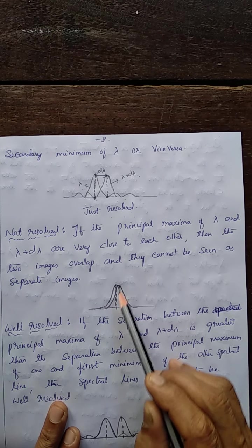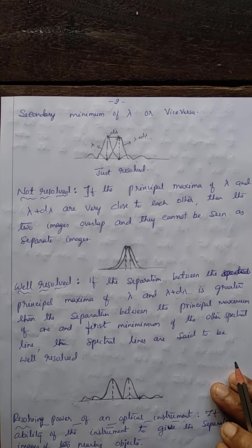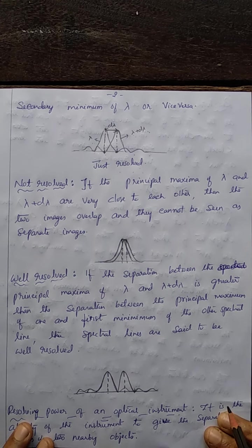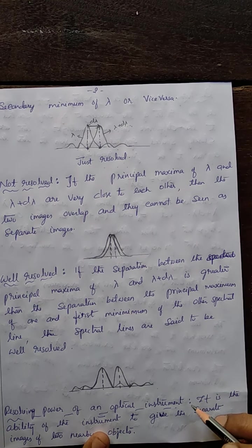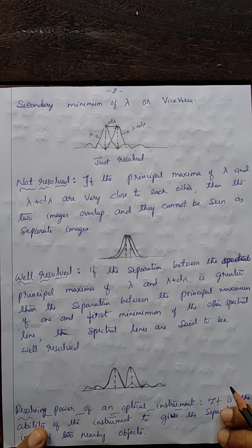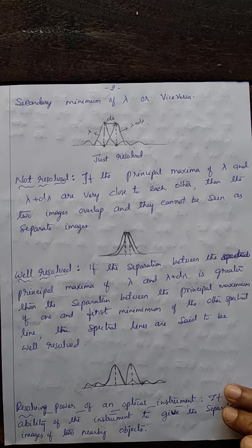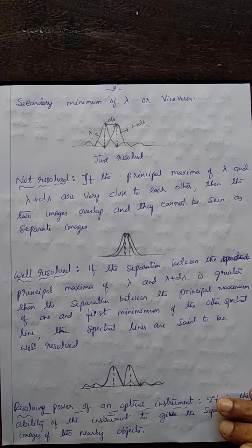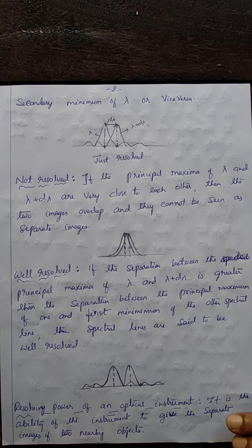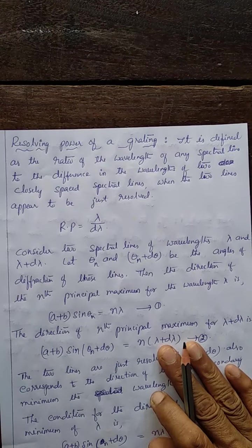Not resolved means the two principal maxima overlap. Well resolved means they are well separated. These are the Rayleigh's criteria for just resolution, unresolved, and well-resolved lines. The resolving power of any optical instrument — such as a telescope or microscope — is its ability to give separate images of two nearby objects. Now let us find the expression for resolving power of a grating.